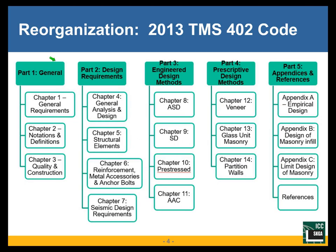We did do some reorganization, not in the sense that ACI 318 did. Basically, chapter one kept growing and growing, so we essentially split chapter one into seven chapters. Now we have Part One: General, with general requirements, notations, definitions, and quality and construction.